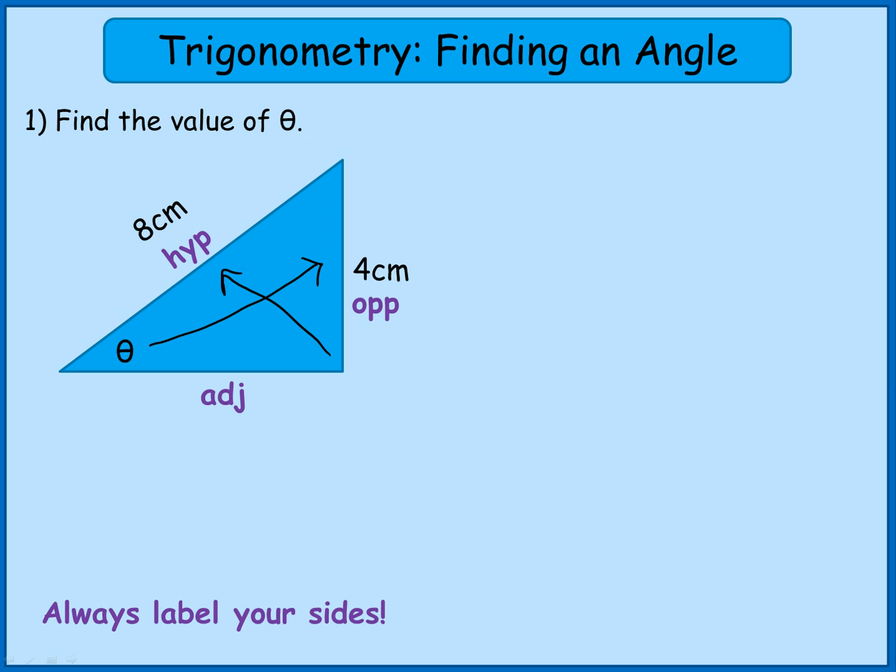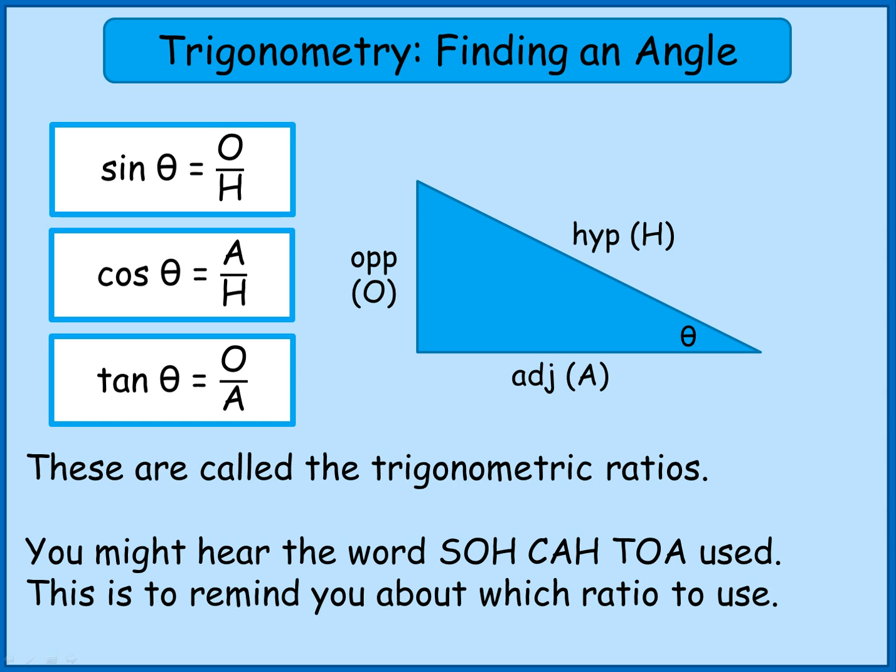Okay, if I look in this question I've got information about the hypotenuse and the opposite, and I'm trying to find this angle. The adjacent is not important. I haven't got any information about it and I'm not trying to work it out. So it might be useful just to cross it out so you don't get confused in the problem. So now we go back and we think about SOHCAHTOA. In my problem I've got opposite and hypotenuse so I'm going to be using sine.